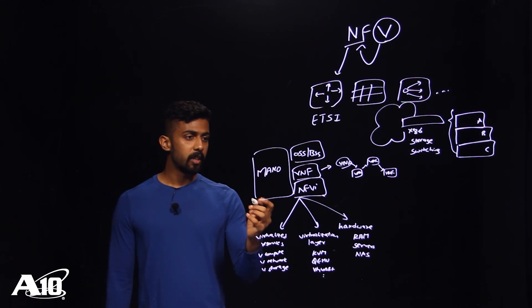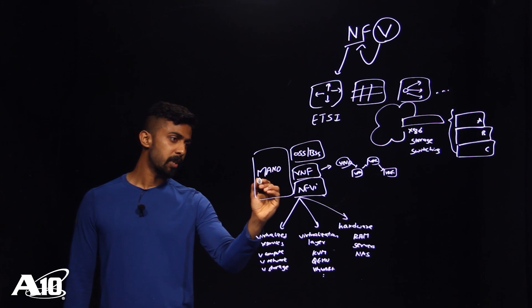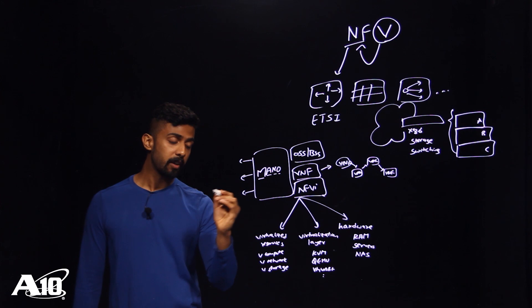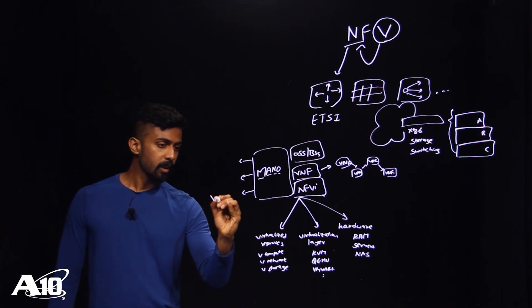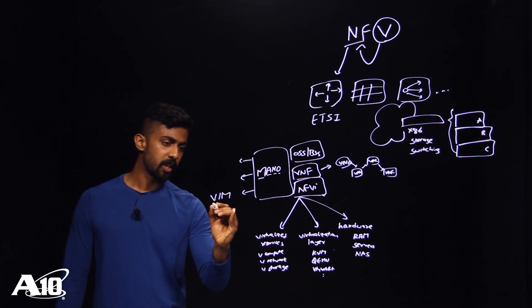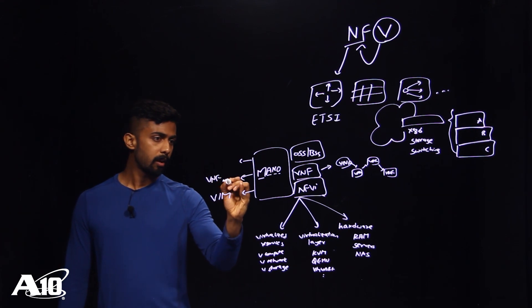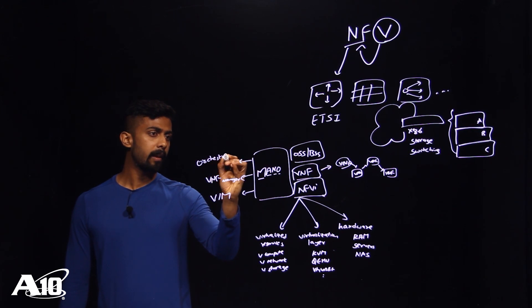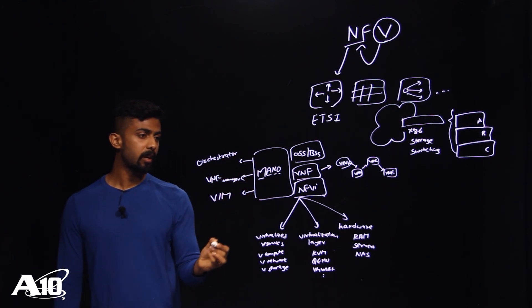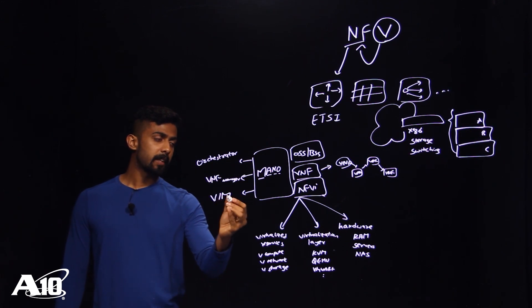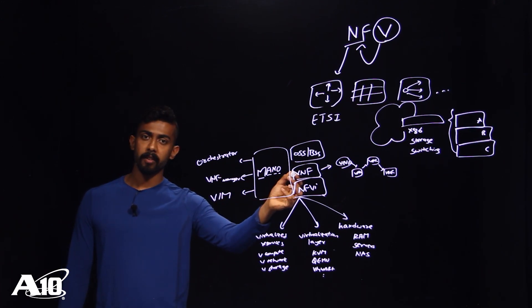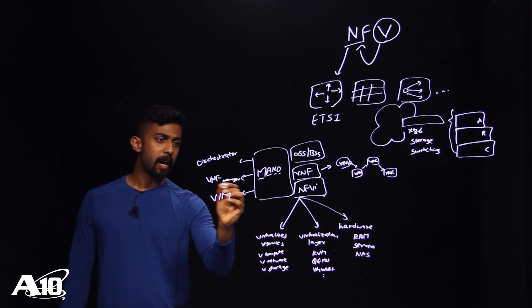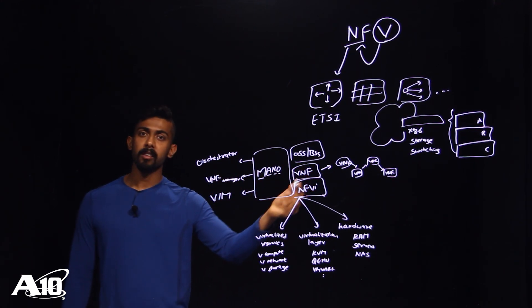Moving on to our third topic, the MANO layer. MANO means Management and Network Orchestration, and it further divides itself into three parts: VIM — Virtualized Infrastructure Manager — VNF Manager, and Orchestrator. The Virtual Infrastructure Manager basically manages the interactions of the VNFs with the NFVI resources.